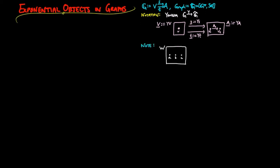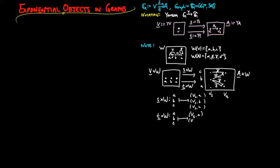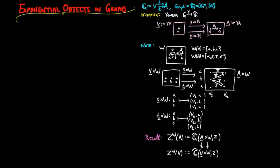If W is the following graph, the product by the representables gives us two inclusions of vertices. The product of underline v and W is the graph with the same vertex set as W but with no arcs, since the representable of v has no arcs. The product of underline a and W has the same arc set as W, viewed as stretched out along the vertices of underline a into two columns. The morphisms underline s × W and underline t × W are the inclusions of a, b, c into the appropriate column. The arc set of the exponential z^W is the set of morphisms from underline a × W to z, and the vertex set is the set of morphisms from underline v × W to z, with the right actions given by precomposition by underline s × W and underline t × W.